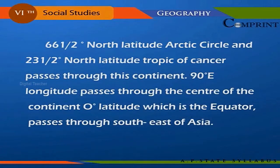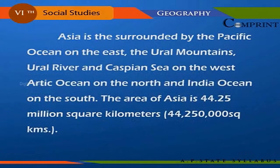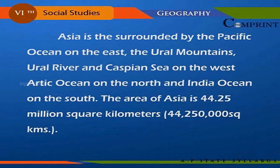The zero degrees latitude, which is the equator, passes through the southeast of Asia. Asia is surrounded by the Pacific Ocean on the east, the Ural Mountains, Ural River, and Caspian Sea on the west, the Arctic Ocean on the north, and the Indian Ocean in the south.